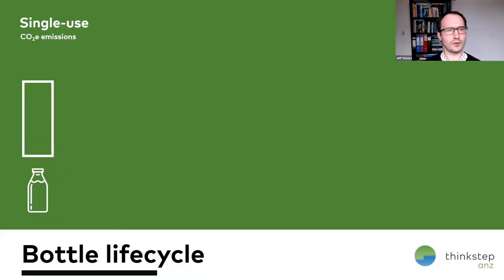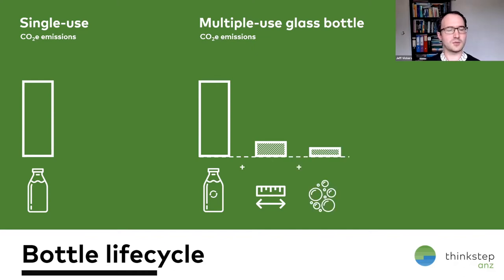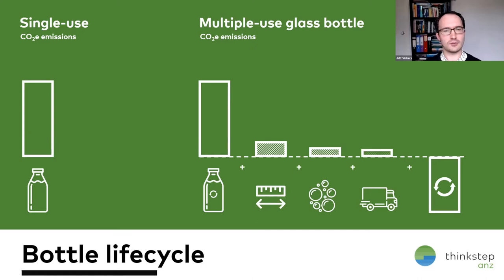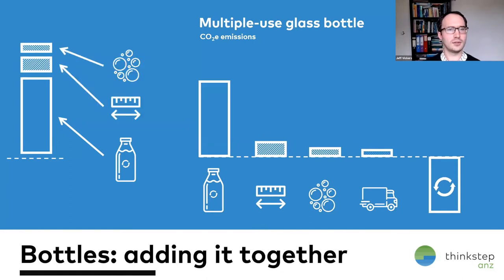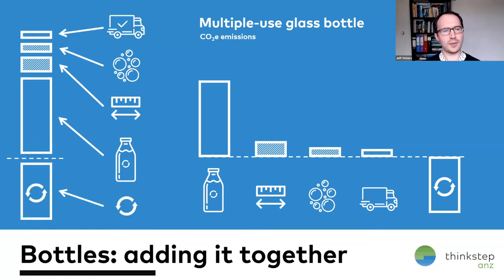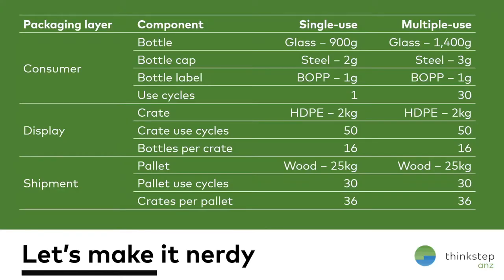For the single use bottle, we have all the emissions associated with making that one bottle. In the multi-use case it's similar, except the bottle is a bit thicker — more glass, therefore a bit more impact. We also have to wash the bottle and get it back to the point where it can be refilled. And we have to recognize the benefit from not making the same bottle again in the next life cycle. If we stack that up: we start with the single bottle, add the thicker wall, the cleaning stage, the truck, and get a benefit back for the reuse. To quantify this, we need to take a next step to life cycle assessment — put some real numbers around it.